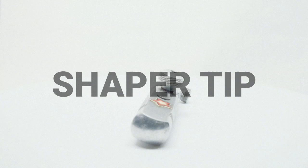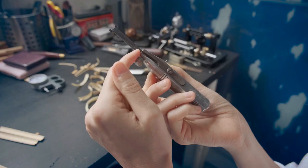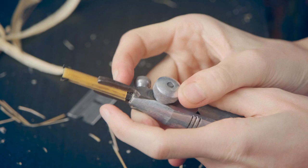This is called a shaper tip. Basically, you consider it like your mouthpiece. I have just put the cane in the shaper tip. Take a razor blade.